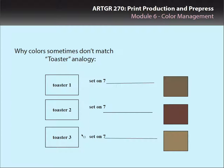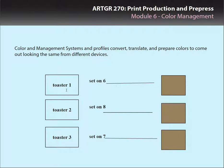Color management's idea is to make these three toasters able to create the same brown. To do that, I would have to adjust toaster one to six, toaster two to eight, and toaster three stays on seven to make them all come out the same brown. So I've adjusted the toaster settings to make the toast color come out correctly. And that's what color management does — it adjusts your files and images so that they come out correctly.